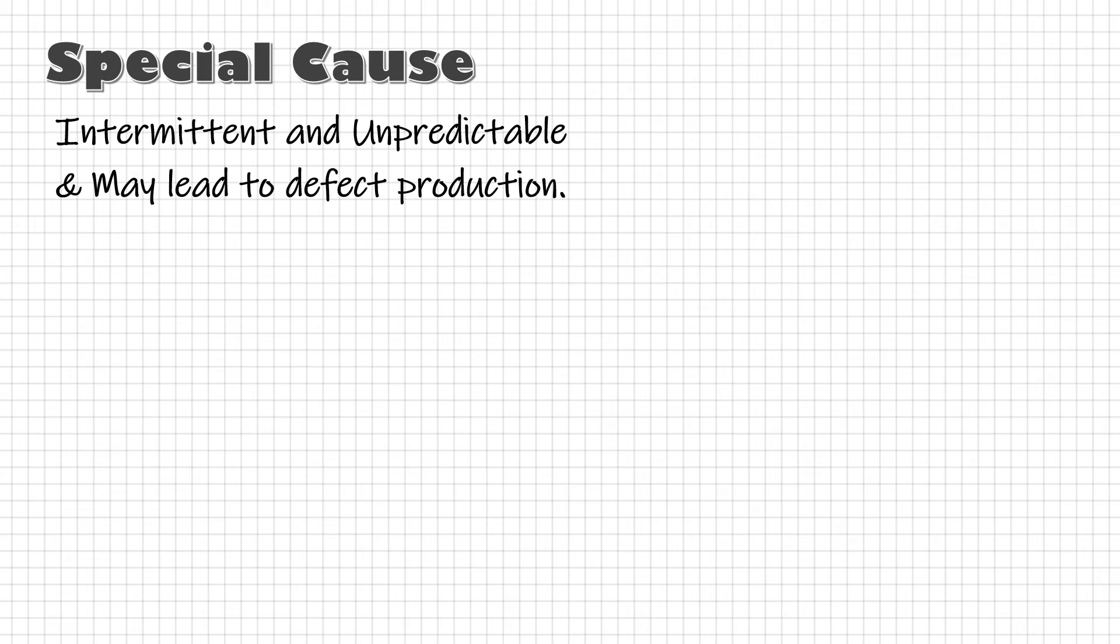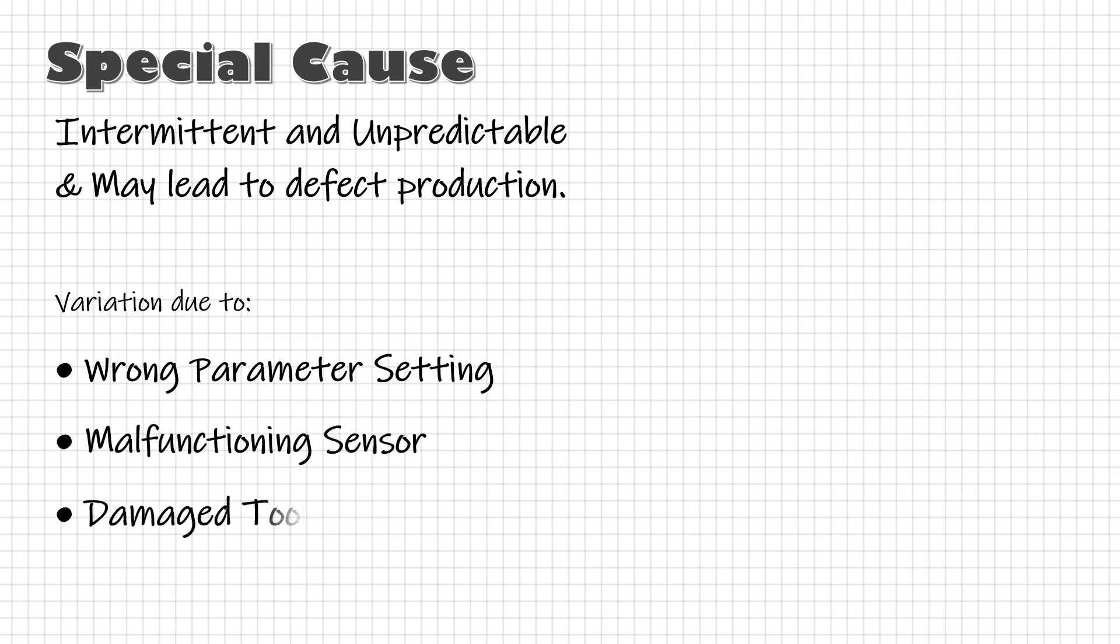On the other hand, special cause affects only some of the process output. They are intermittent, unpredictable, and may lead to production of defective parts. For example, wrong parameter setting, malfunctioning sensor, a damaged tool, operator dropped a bin of parts. You get the idea. Generally, these are the causes you identify during the root cause analysis of a defect.